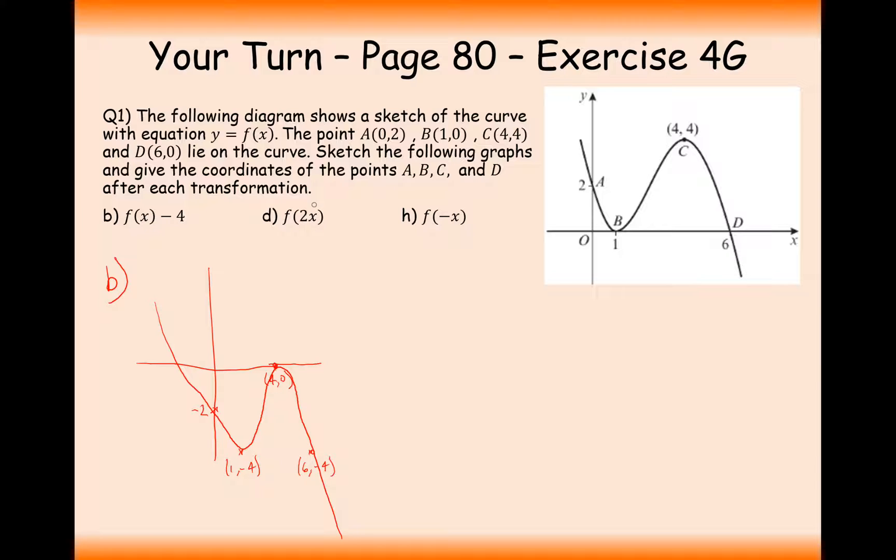we have a transformation inside the brackets this time. And inside the brackets affects horizontal transformations. Inside the brackets is also opposite land. So where we think we might stretch it out by a factor of 2, the reverse is actually the case. We're going to in fact squish it inwards by a factor of 2, and the reason being is that the x coordinates now only need to be half as big as they were previously to get the same corresponding y coordinate.